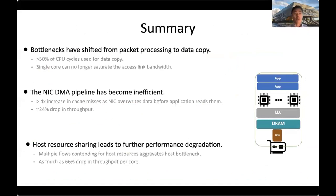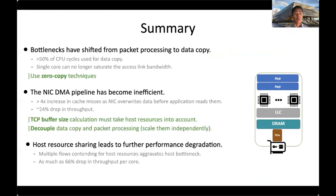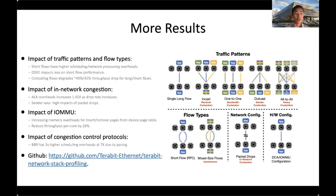Recent receiver-driven transport protocols like pHost, NDP, and Homa could enable such orchestration. More generally, designing transport protocols for high-bandwidth networks requires solutions encompassing techniques from computer networking, computer architecture, and operating systems. In summary: data copy is the primary bottleneck; the NIC DMA pipeline has become inefficient; and host network stack performance degrades significantly with increasing numbers of flows competing for host resources. All profiling and measurement tools are available on our GitHub repository.